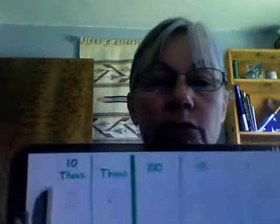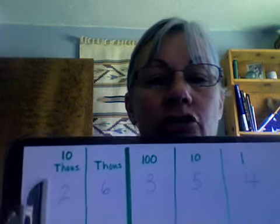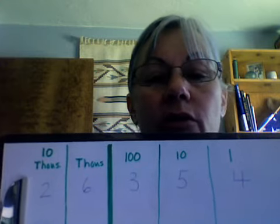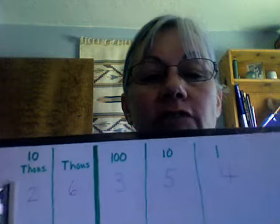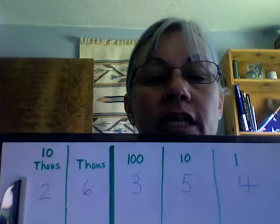Today I'm going to explain how to figure out how much more one number is than another one by using the place value chart. As you can see, I've written our old friend 26,354 on a place value chart, and I'm going to add another number below that we will compare today, and then we'll do some counting to figure out how much more one number is than the other.